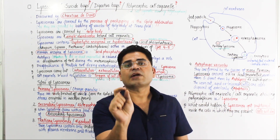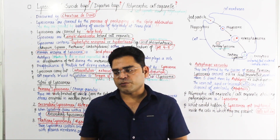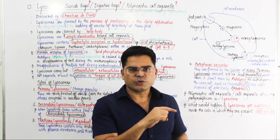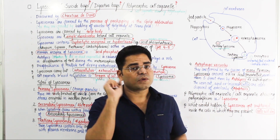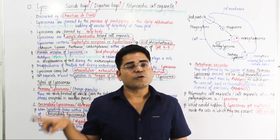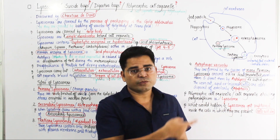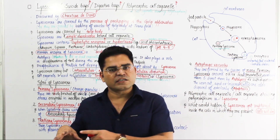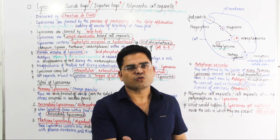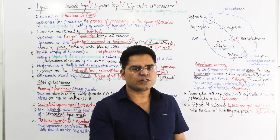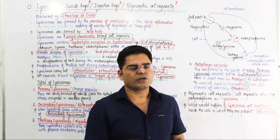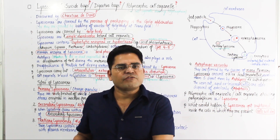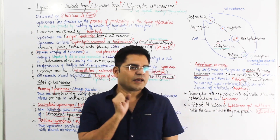Let us discuss the primary lysosome. When a vesicle buds off from the Golgi body's trans-face, enzymes are loaded into it. These enzymes are present in an inactive form inside the endoplasmic reticulum. This newly formed vesicle with inactive enzymes is called the primary lysosome.